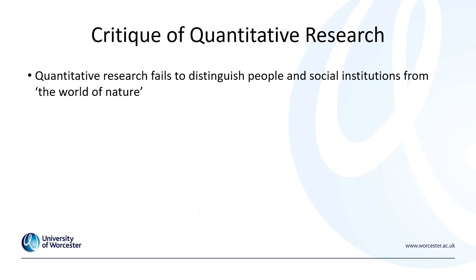Also, the measurement process of quantitative research possesses an artificial and spurious sense of precision and accuracy. When it comes to quantitative data analysis we use recommendations from statistical literature. However, ultimately an element of interpretation is needed even for quantitative research and statistical analysis — the argument being that undertaking statistical analysis can offer a false sense of security about precision and accuracy, and that quantitative analysis also involves an element of interpretation.